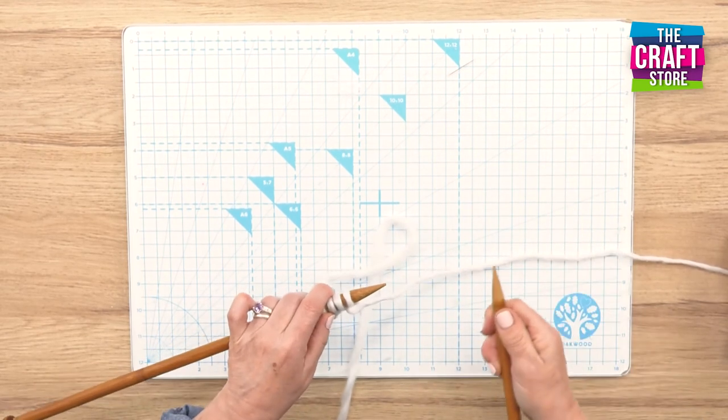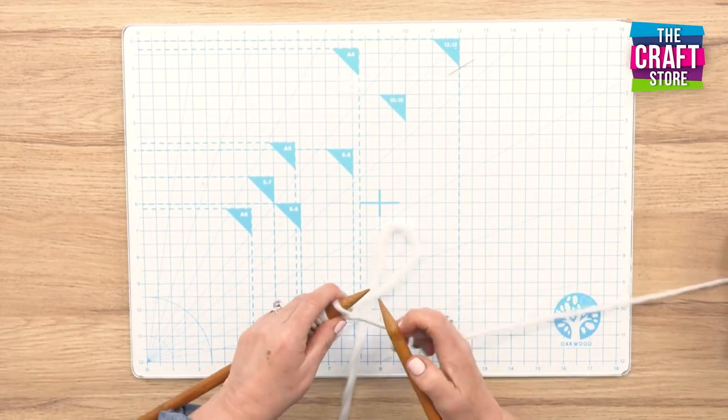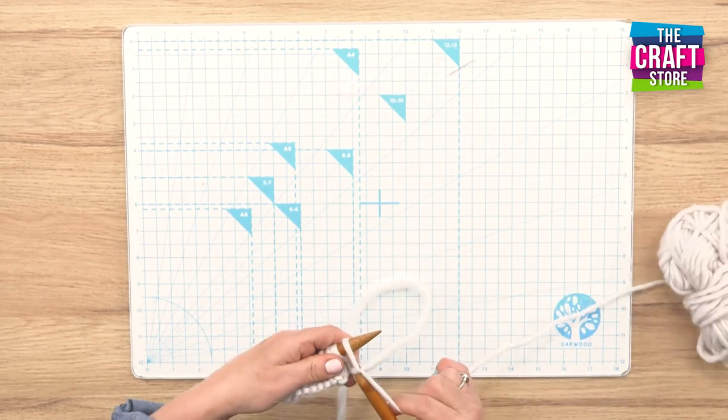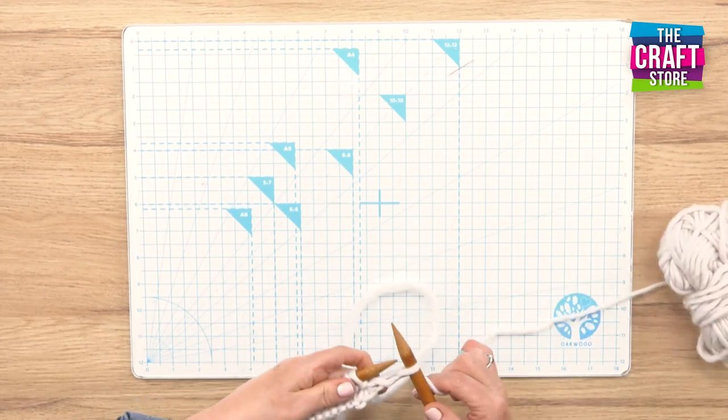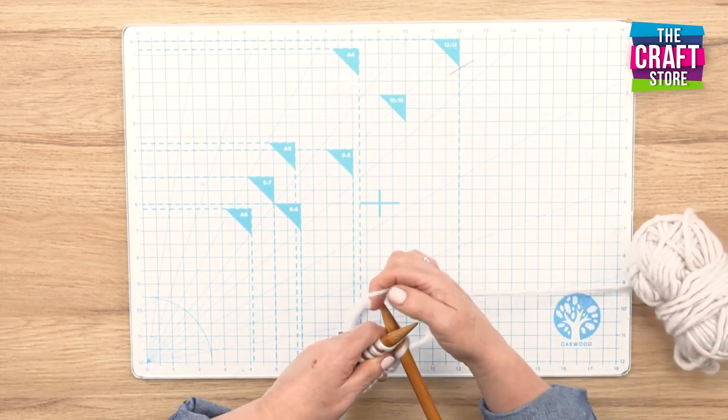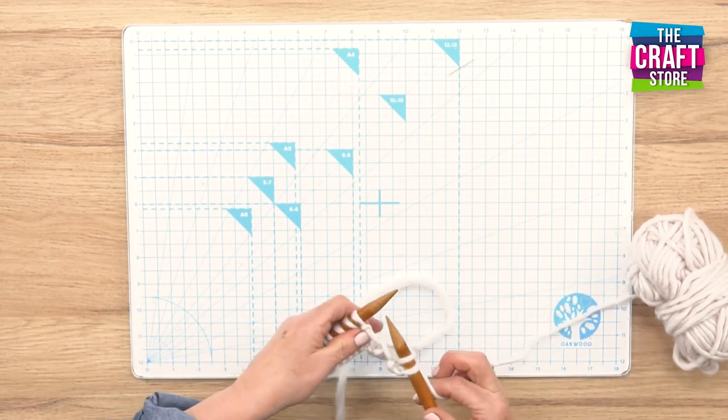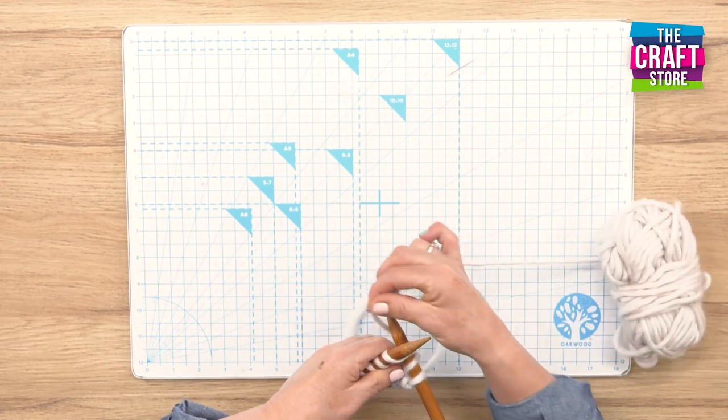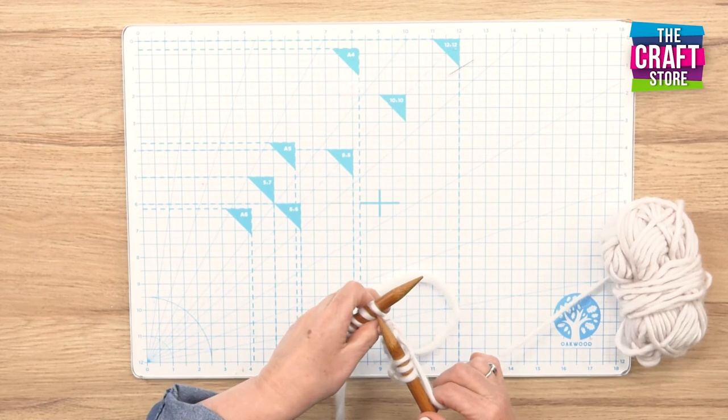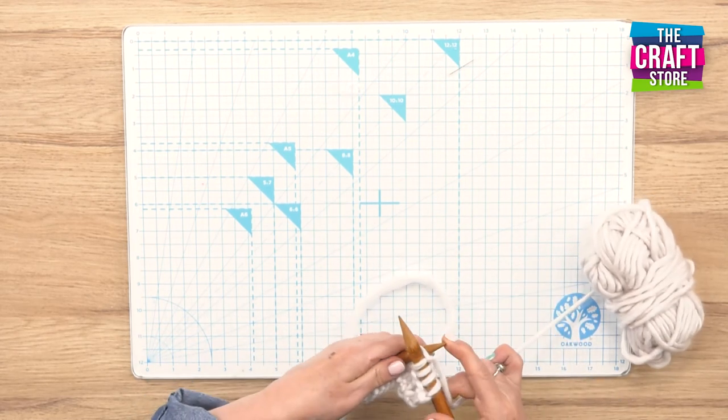So we go into the first stitch, wrap your yarn round under, under and off. Into your first stitch, wrap it round under and off. In, round, under and off. In, round, under, off. In, round, under, and off.